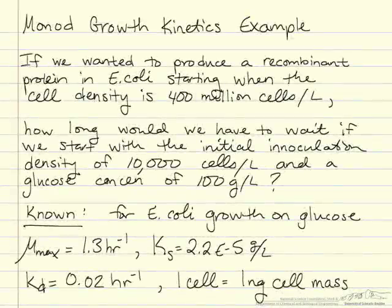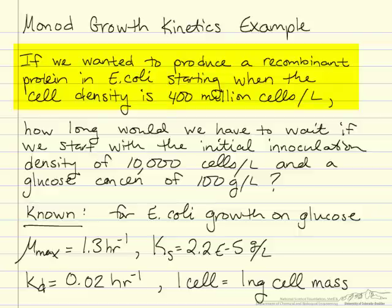In this example we'll be looking at Monod growth kinetics. The problem statement is that if we wanted to produce a recombinant protein in E. coli once the cell density had reached 400 million cells per liter.